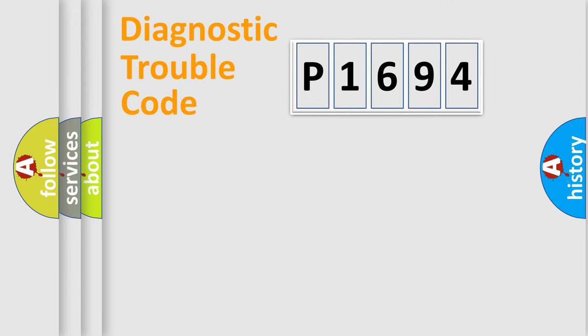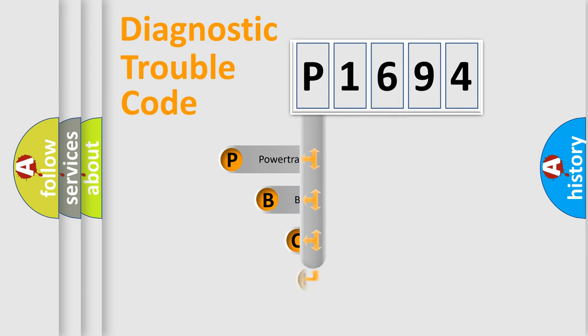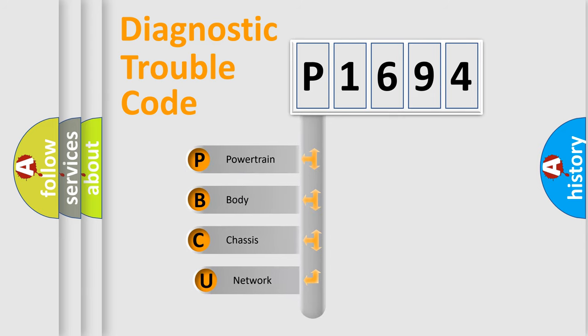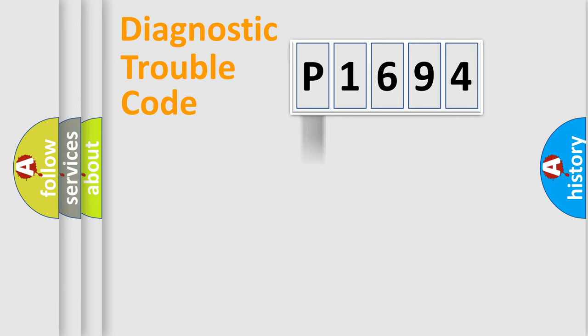Let's do this. First, let's look at the history of diagnostic fault code composition according to the OBD2 protocol, which is unified for all automakers since 2000. We divide the electric system of an automobile into four basic units: powertrain, body, chassis, and network.